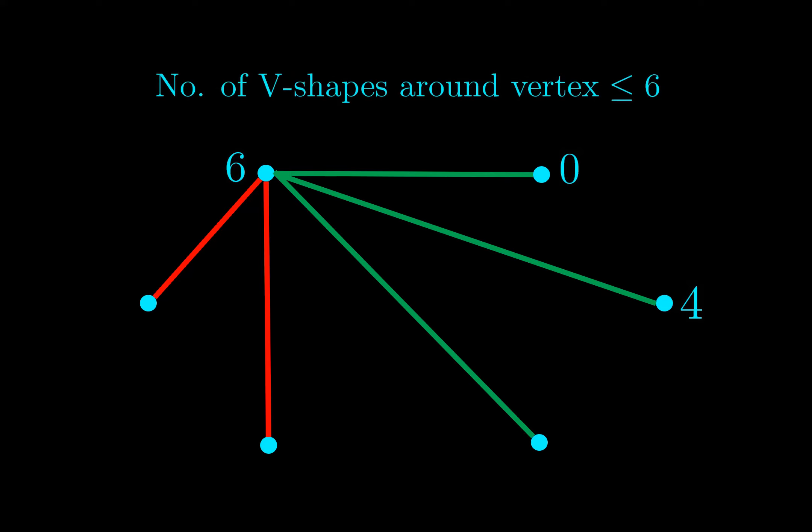We can conclude that no matter which case you are in, the number of V shapes around any vertex is at most 6. And since there are 6 vertices, the total number of V shapes is at most 36.